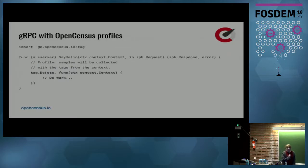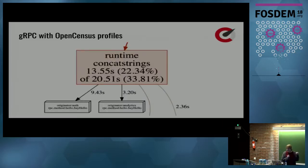OpenCensus also provides support for PPROF. If you use the tag package, you can collect CPU samples with the tags inside the incoming context. And then you can see the hot spots for specific requests, RPCs and whatever you have put in your tags. This is a GRPC server profiled with OpenCensus. We are looking at a typical visualization from PPROF data. You can see the runtime concat strings spend 9.43 seconds for RPCs coming from authentication and 3.20 seconds for the RPCs coming from the Analytics service.